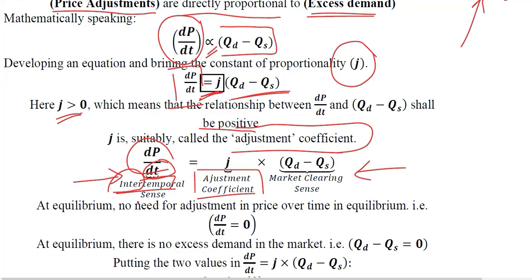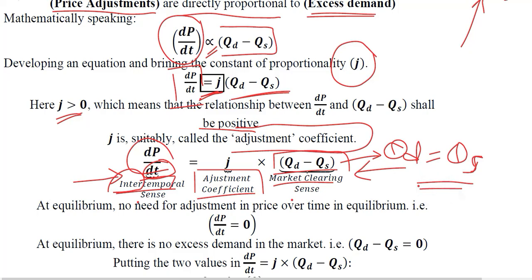The conventional static analysis is represented by QD minus QS, which is the market-clearing sense, derived from the market-clearing equation QD equals QS. QD minus QS is another way of writing that market-clearing condition. We have now made clear sense of all the terms in this equation.